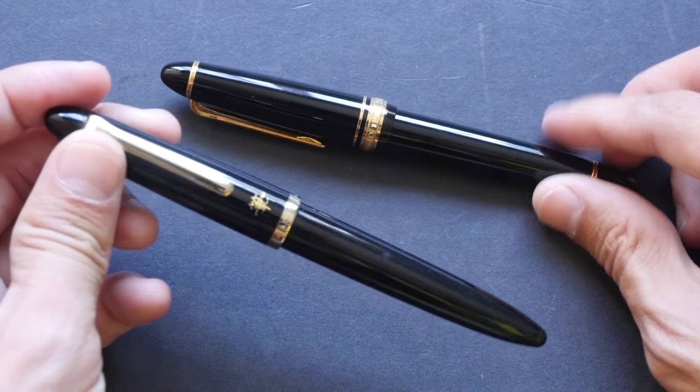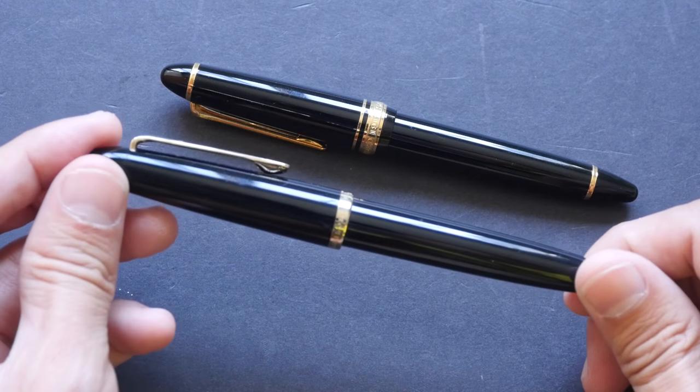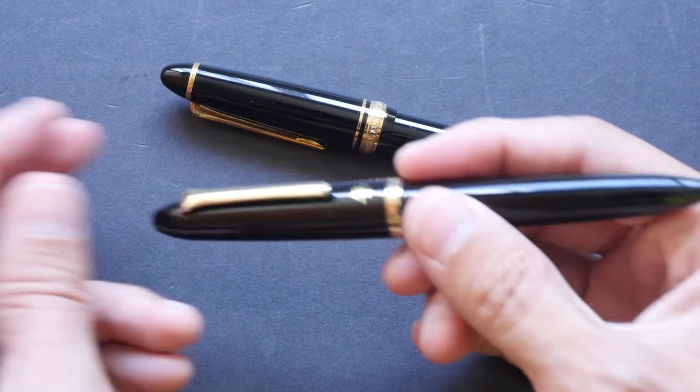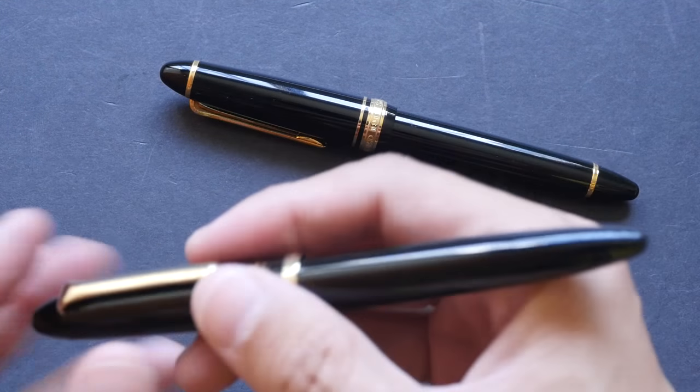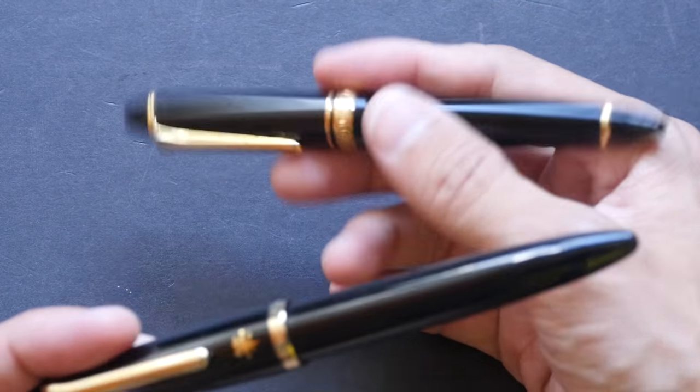Now for the Sailor brush pen, this is made of plastic. It feels a bit cheap. It's very lightweight, definitely much lighter compared to this fountain pen here.